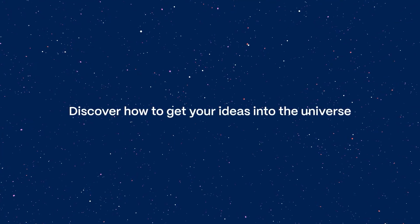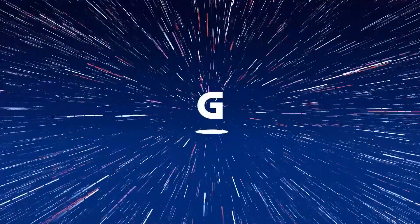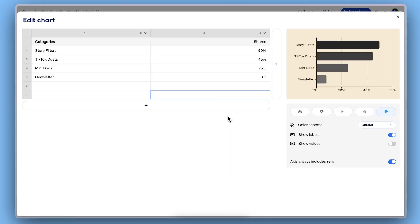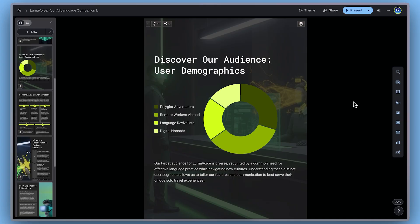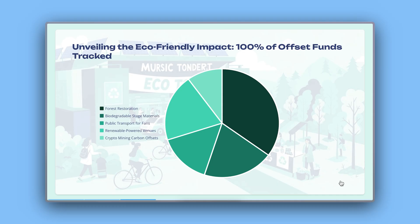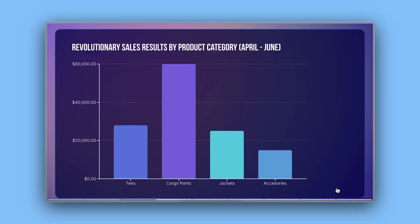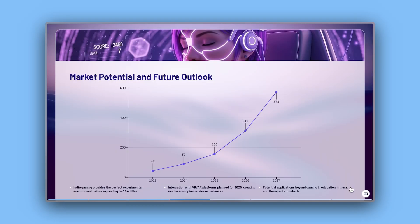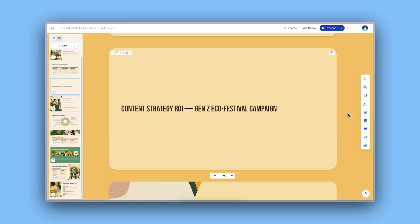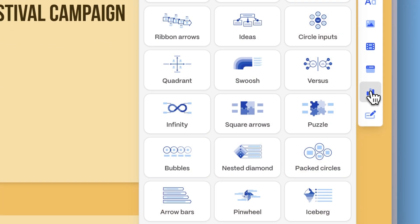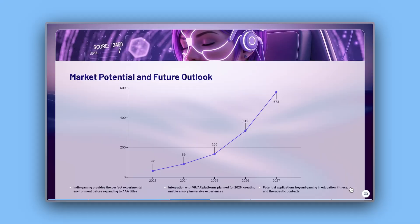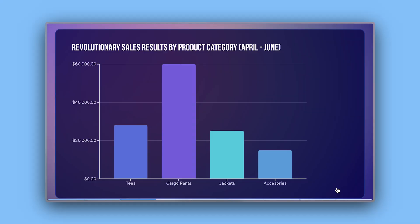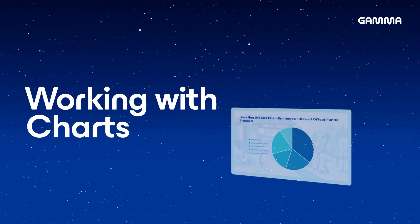Discover how to get your ideas into the universe. With Gamma, you can turn your data into presentations and documents with beautiful charts that make your content more visual, engaging, and easier to understand. In this video, we'll show you how to use charts in Gamma to help you visualize trends, compare metrics, and support your ideas. Let's dive in.